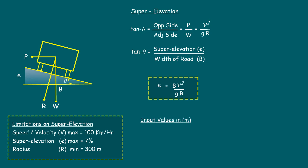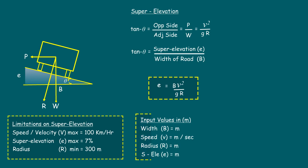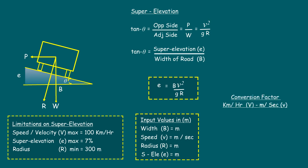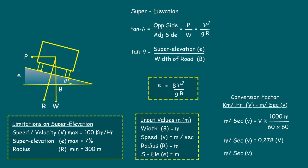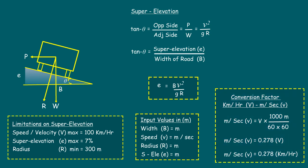We must remember that all input values are in meters — the width of the road b is in meters, the speed of the vehicle v is in meters per second, and the radius of the curve is in meters. So the value of e arrived is also in meters. In case the given speed of the vehicle is in kilometers per hour, we must convert that into meters per second. The conversion factor is 1000 meters divided by 60 minutes × 60 seconds, which equals 0.278 meters per second. Multiply the design speed given in km/h with this value to get the value in meters per second.